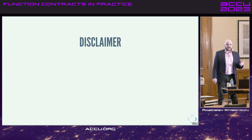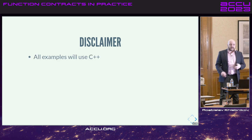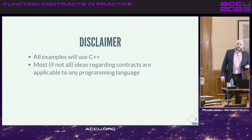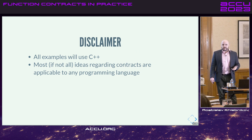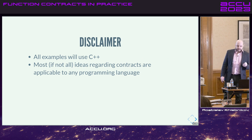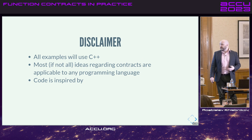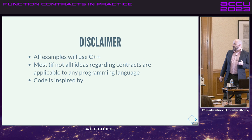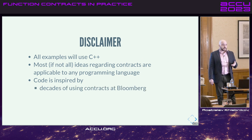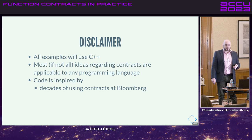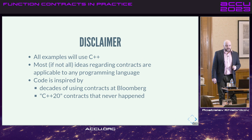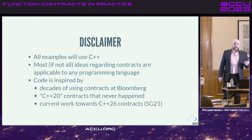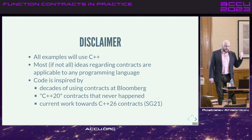Before I continue, I want to give a little disclaimer. All my examples will be in C++. I am a C++ developer through and through — I've been working with C++ for over 15 years. But it's important to note that most of the ideas I'm going to be talking about are applicable to pretty much any programming language; it's not specific to C++. The code on the slides will be inspired by decades of using contracts in Bloomberg, the C++20 contracts work, and the current work towards C++26 contracts in study group 21 in the ISO process.